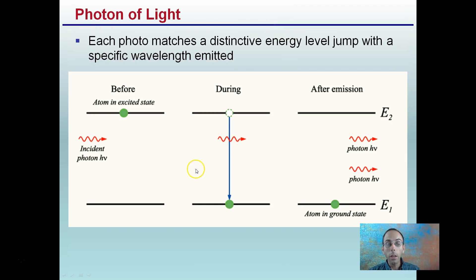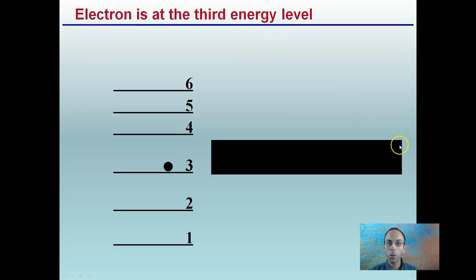So that photon of light, each photon matches a distinctive energy level jump with a specific wavelength emitted. So here's our before atom in the excited state. During, we're dropping down an energy level, giving off that photon of light. And depending on what energy level or what energy levels it may jump will depend on the wavelength of light given off.